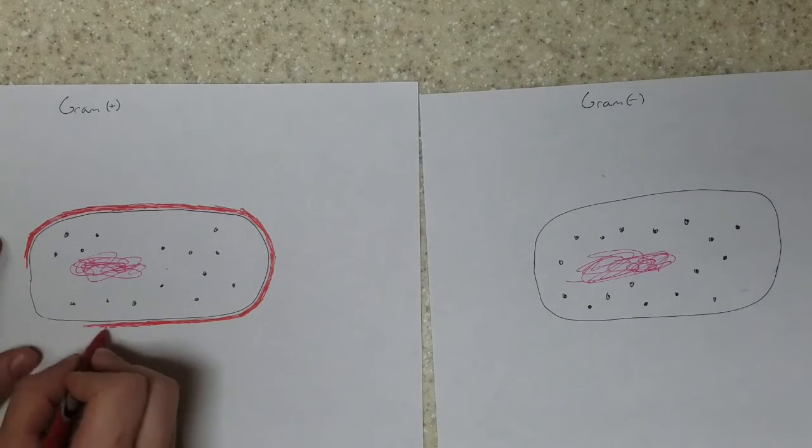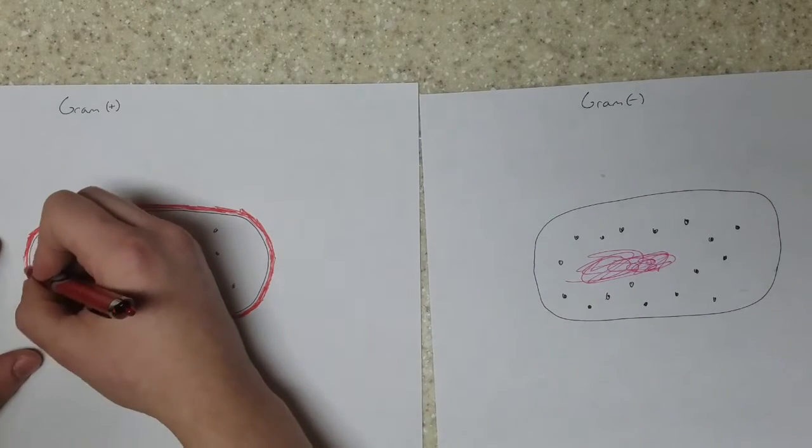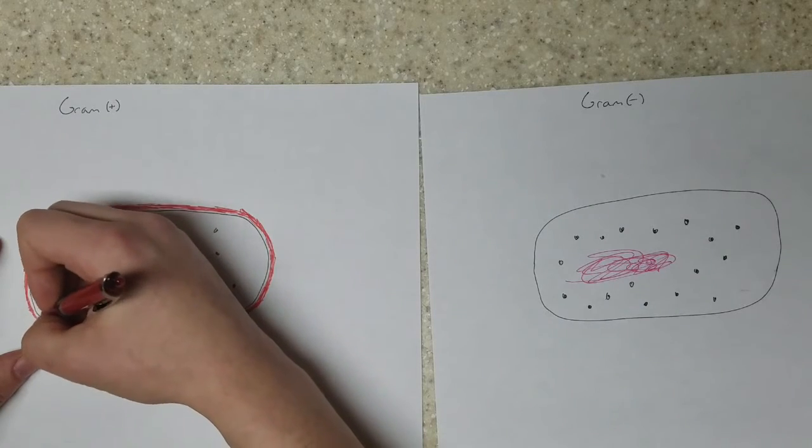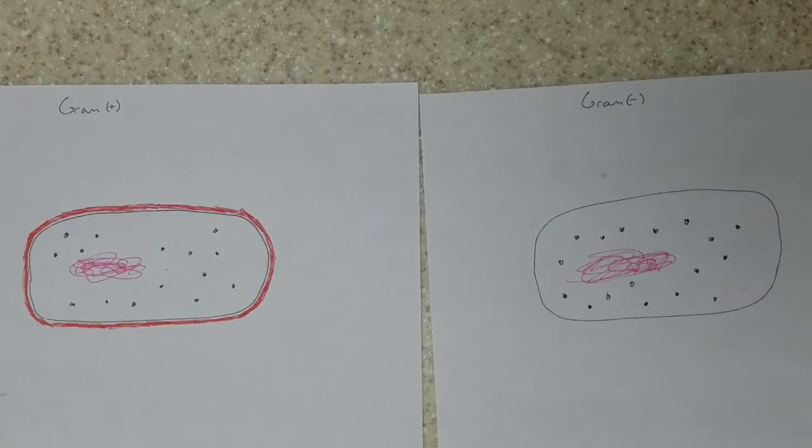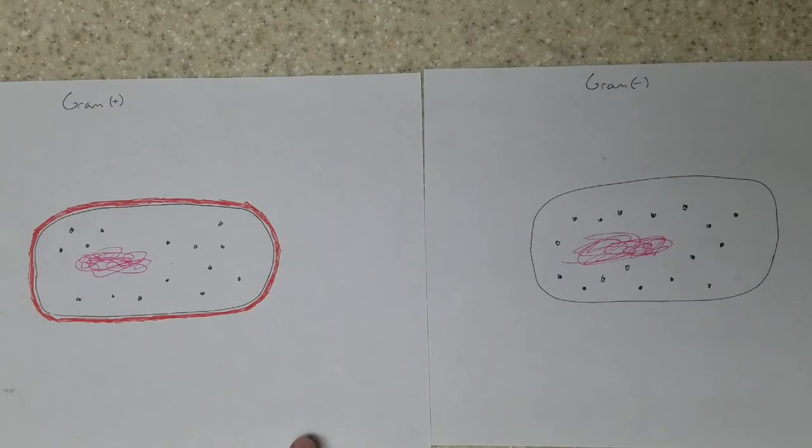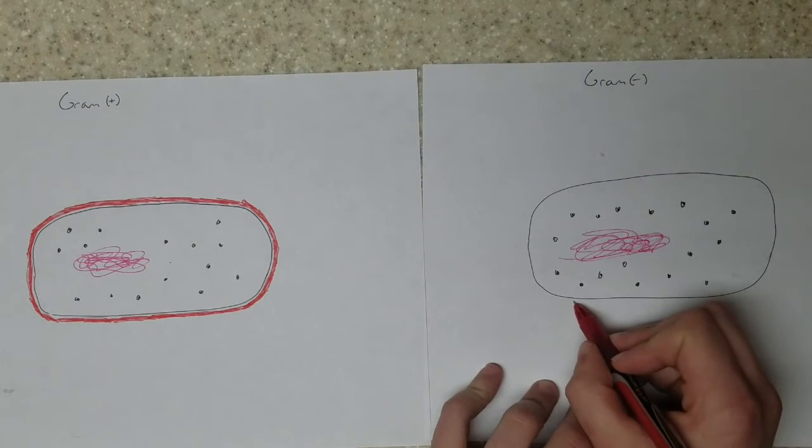And when you wash it off, none of the stain comes out of the gram-positive cell because the thicker cell wall has retained the stain. And that's why when you look at them in the microscope, a gram-positive cell is purple.